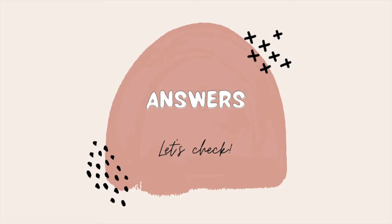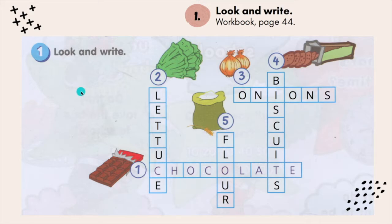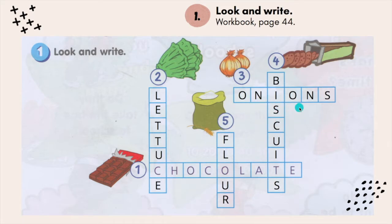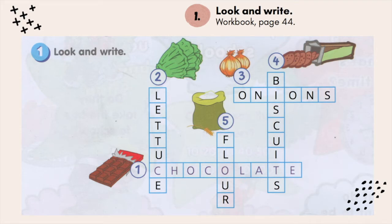Now let's look at the answers. Please make sure you have done all the exercises first. For exercise 1 on page 44 of your workbook — look and write, let's check one by one. Number 1: chocolate. Number 2: lettuce — L-E-T-T-U-C-E. Next: onions — O-N-I-O-N-S. Number 4: biscuits — B-I-S-C-U-I-T-S. Number 5: flour — F-L-O-U-R. You can pause to check your answers.